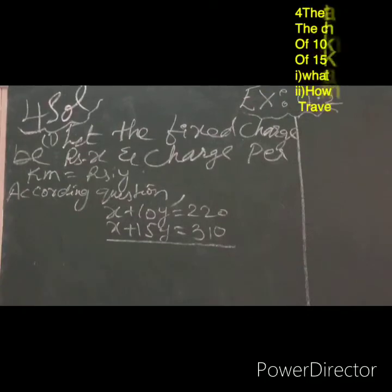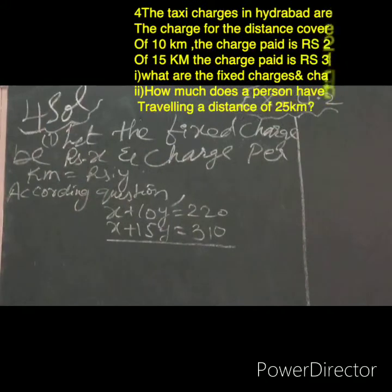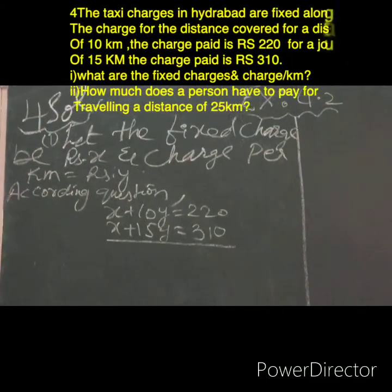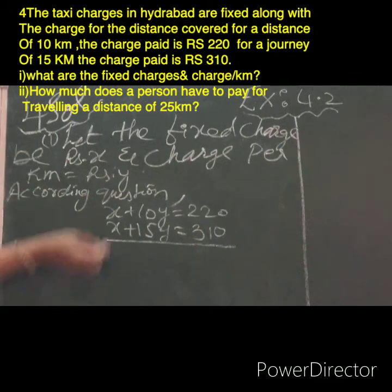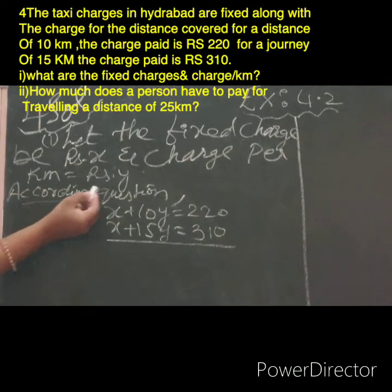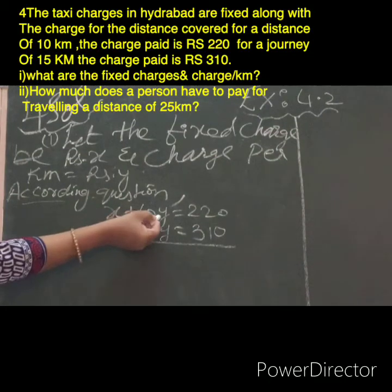Check the 4th solution. You already read the question — once again you can read it. In this problem we have to find: first, the fixed charge and charge per kilometer; second, the amount for 25 kilometers. Let the fixed charge be X and the charge per kilometer be Y. This X is the fixed charge and 10Y is the charge per kilometer giving the total amount.